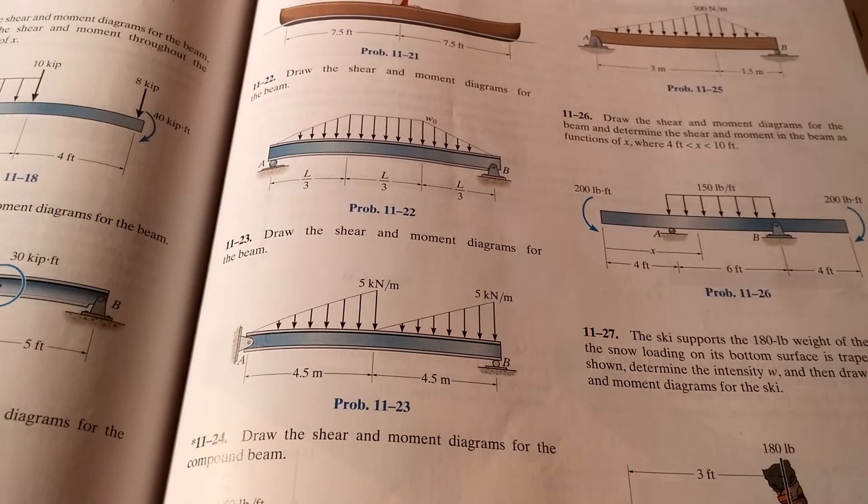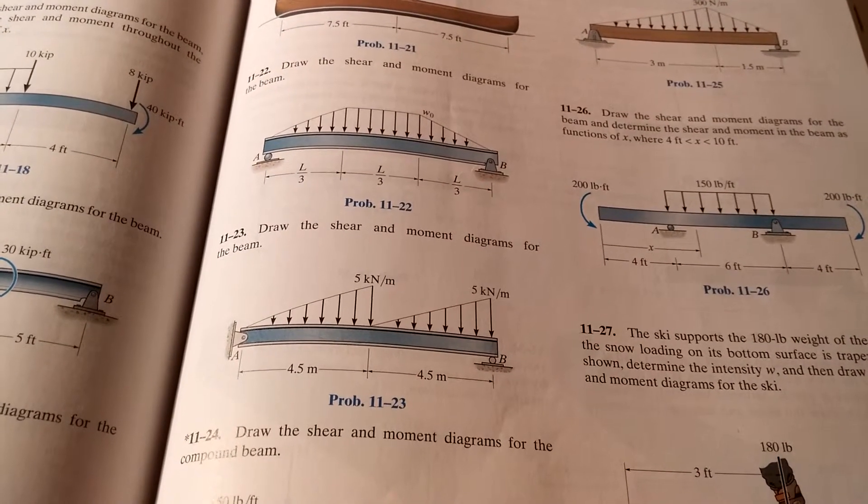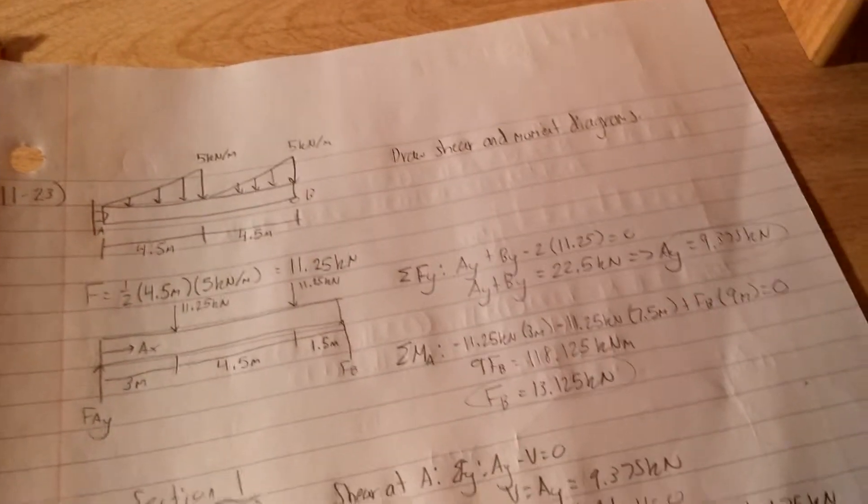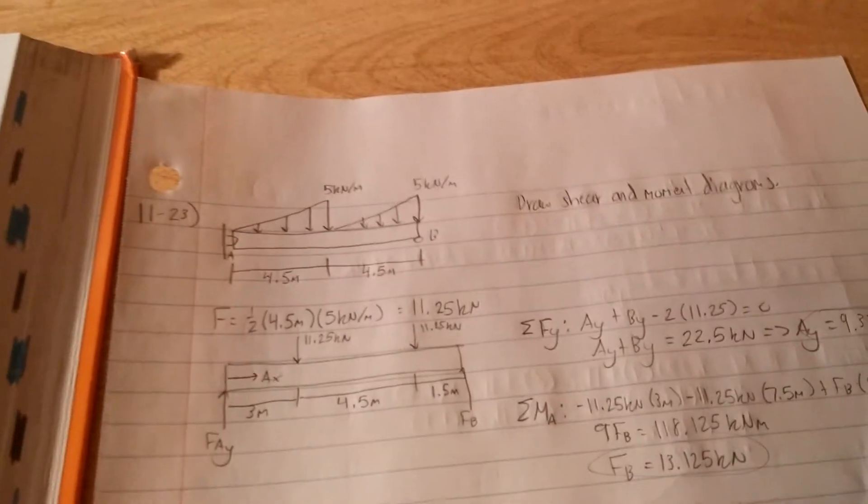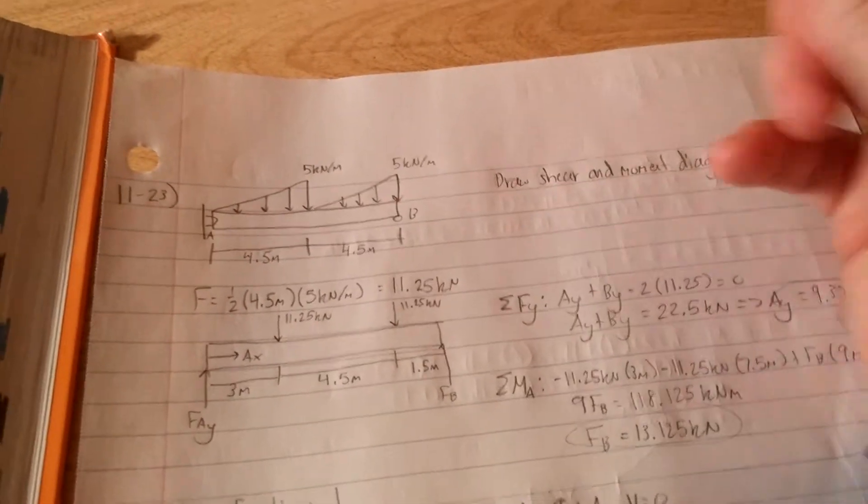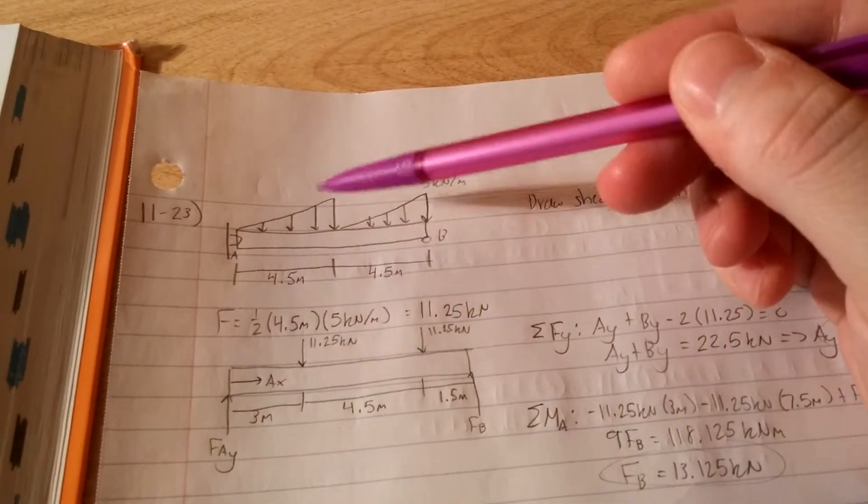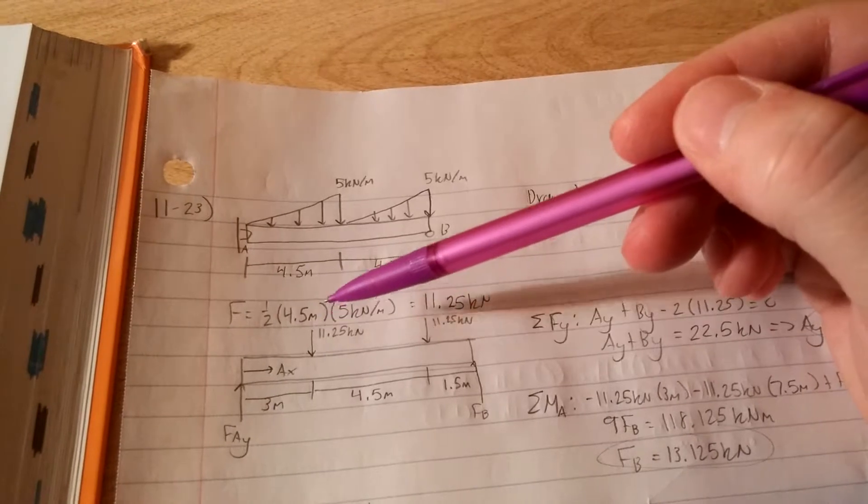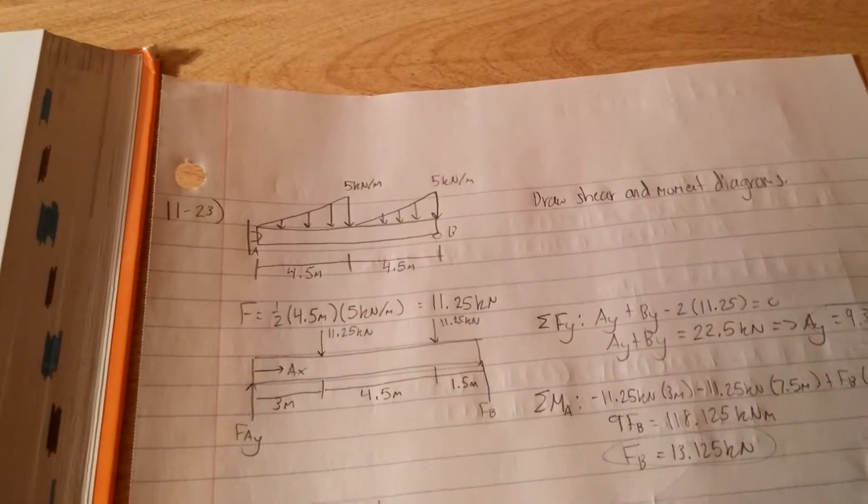So it would be one-half times 4.5 meters times 5 kilonewtons per meter. Over here, I duplicated the figure.